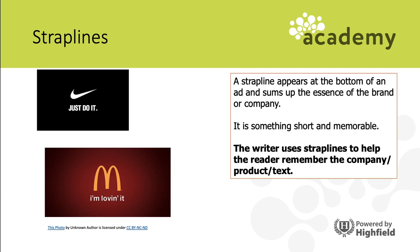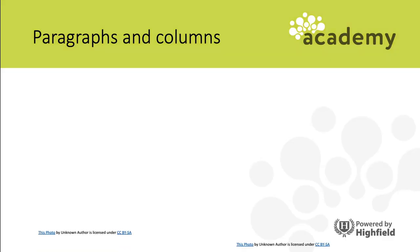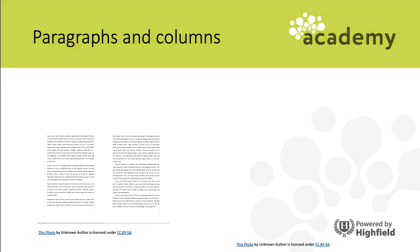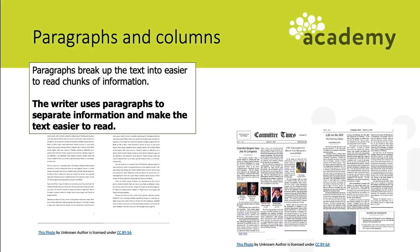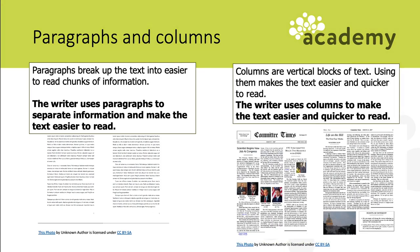Paragraphs break up the text - if you've ever tried to read a text without paragraphs, it's really difficult. Writers use paragraphs to separate information and simply make the text easier to read. Columns are the vertical blocks of text found in newspaper and magazine articles. They also make text easier and quicker to read because your eyes don't have to travel as far across the page, helping the reader consume more information at a quicker pace.